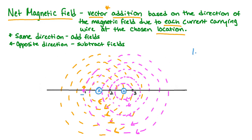At position 1, both the yellow magnetic field and the pink magnetic field are pointing directly to the top of our screen. Therefore, they're in the same direction, which means that we will add the magnitudes of our fields. At position 2, the magnetic field in yellow is pointed to the bottom of the screen and the magnetic field in pink is pointing to the top of our screen, which means they are pointing in opposite directions, so we should subtract the magnitudes.